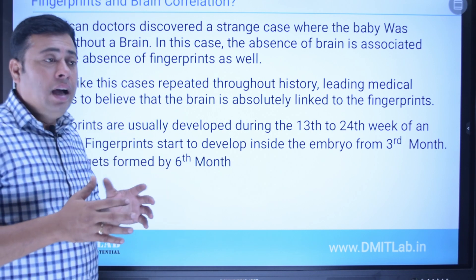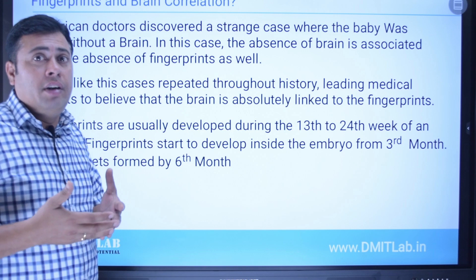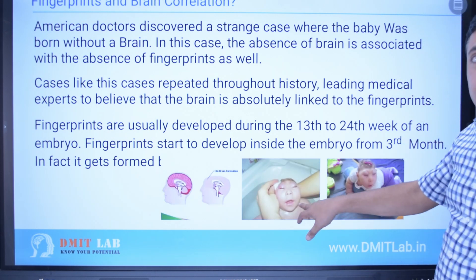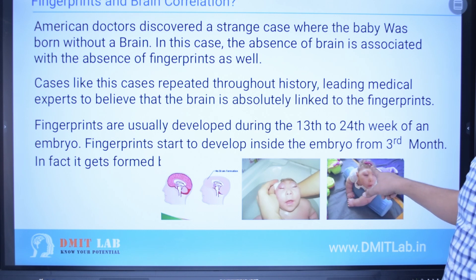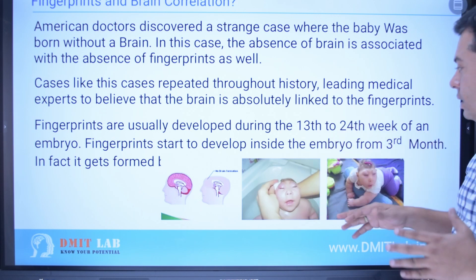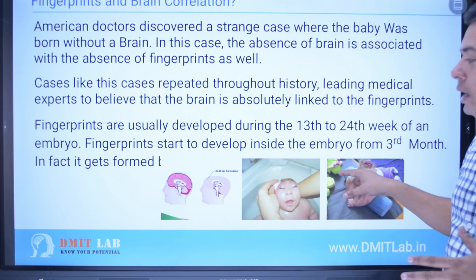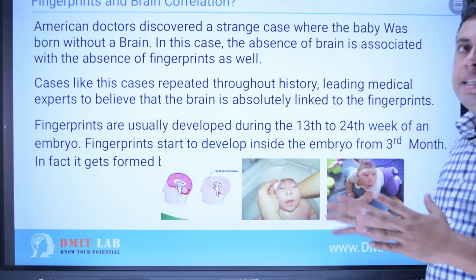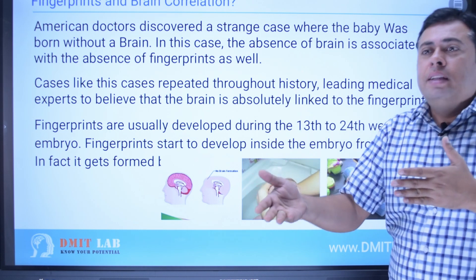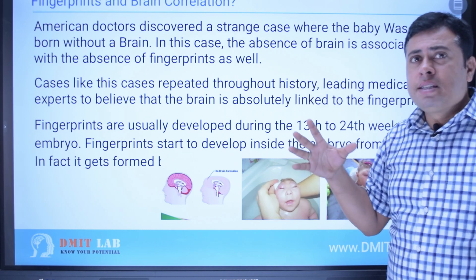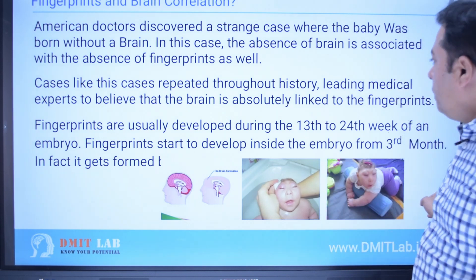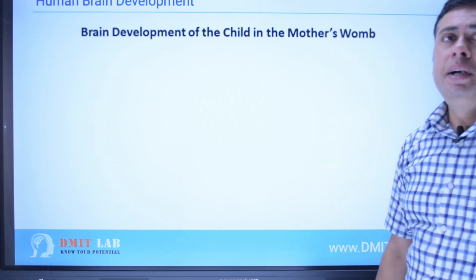Let us understand how the brain is going to be developed and what develops during this window. To summarize the registered cases: a baby was born with no brain, and there was also an absence of fingerprints. Based on these case studies — not just one case, but many repeated cases — wherever brain development did not happen, in the same instances there was an absence of fingerprints. From the many repeated cases they concluded that there is a connection between fingerprints and the brain.